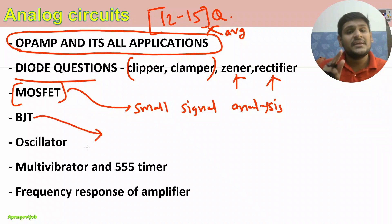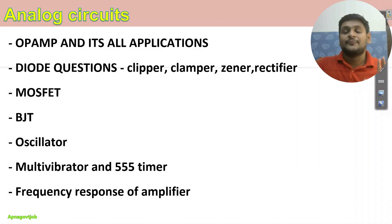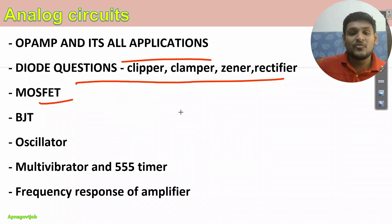BJT again, everything in detail: analysis part, to identify the regions, under saturation, calculation of your current, everything basic things are there. Current mirror also you need to do. Then oscillators, they will ask you. Multi-vibrator and 555 timer. And frequency response of amplifier, that is your upper cutoff, lower cutoff frequency, all the things related to that. These are the overall things you need to study for analog circuits. Maximum questions you can expect from diode and OPAMP, followed by MOSFET. Minimum questions from oscillator, multivibrator, and BJT. Frequency response also I can keep on fourth number, but first, second, third, and fourth are very important in terms of priority.